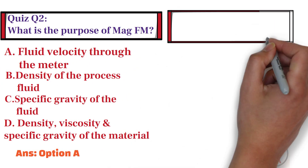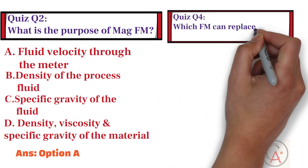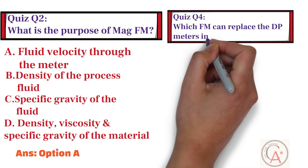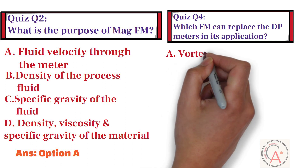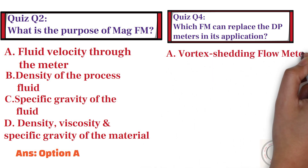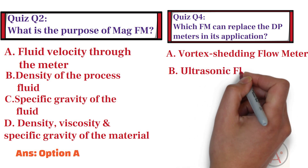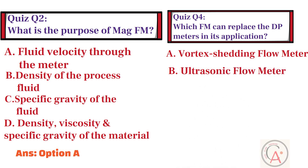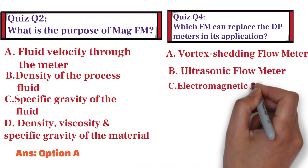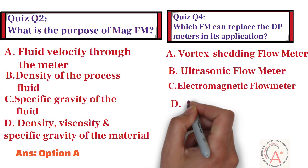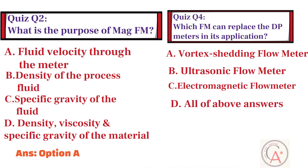The fourth quiz question is: which flow meter can replace the differential pressure meters in its application? Option A: vortex shedding flow meter. Option B: ultrasonic flow meter. Option C: electromagnetic flow meter. And option D: all of the above answers.